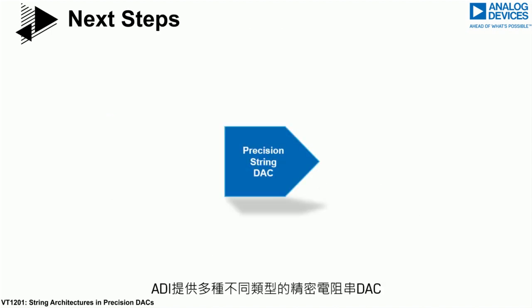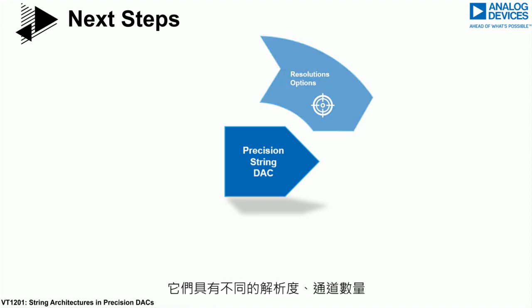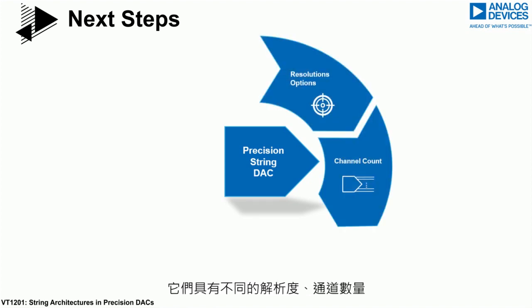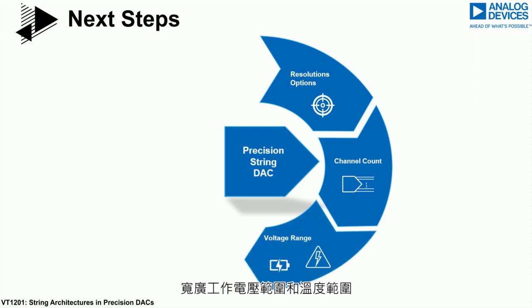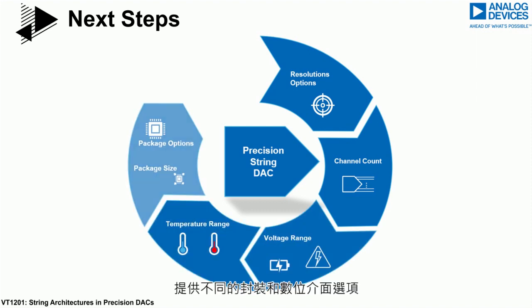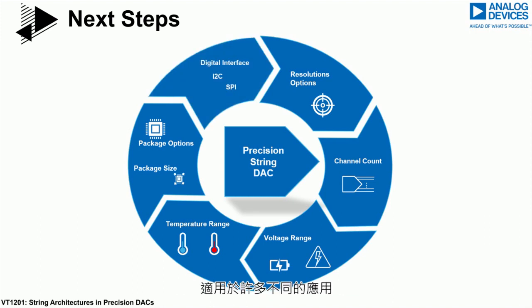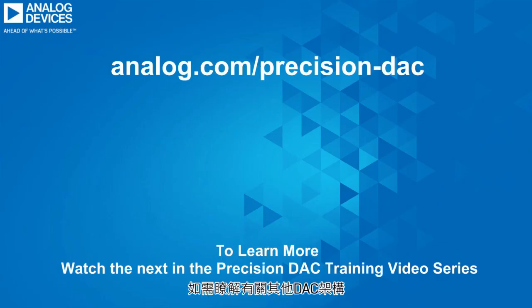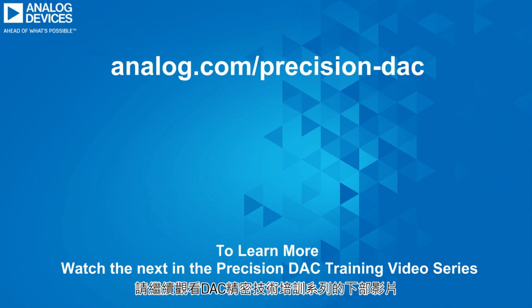Analog Devices has many different types of precision string DACs spanning varying resolution, channel count, a wide range of operating voltage and temperature ranges, and many different packaging and digital interface options applicable to many different applications. To learn more about additional DAC architectures, specifications, and applicable applications, please continue to watch our next video in the DAC Precision Training Series.